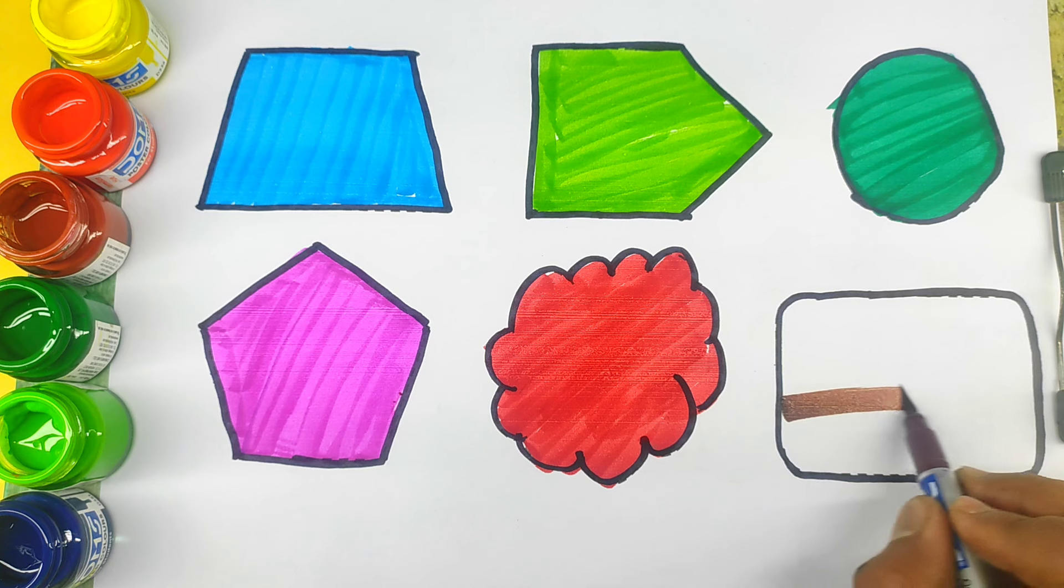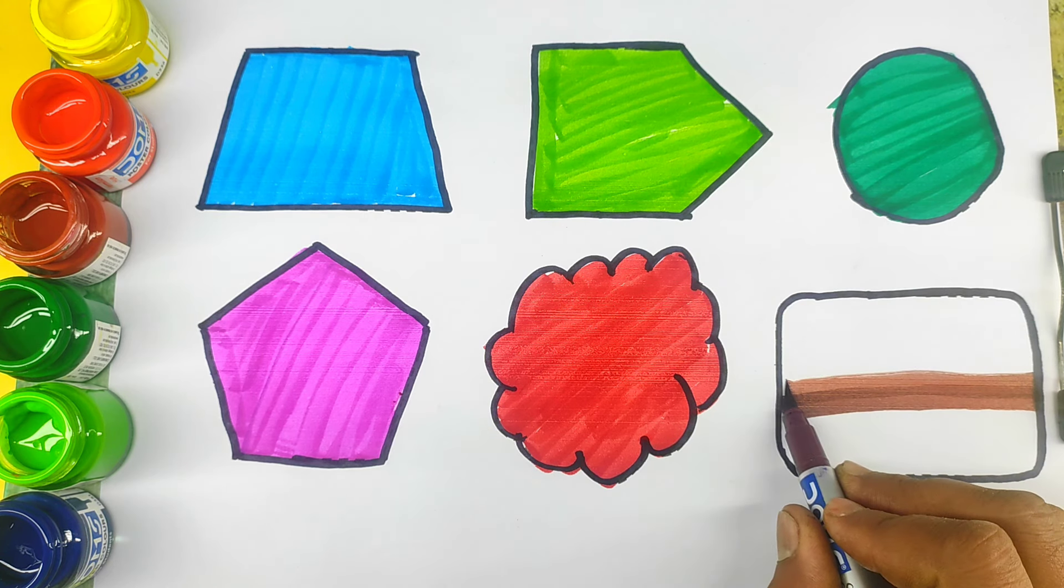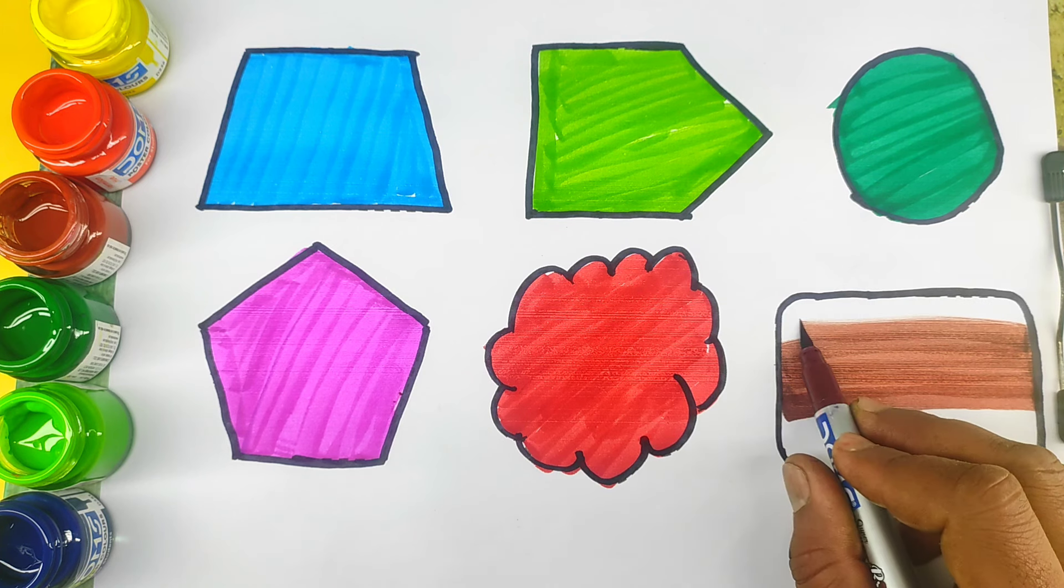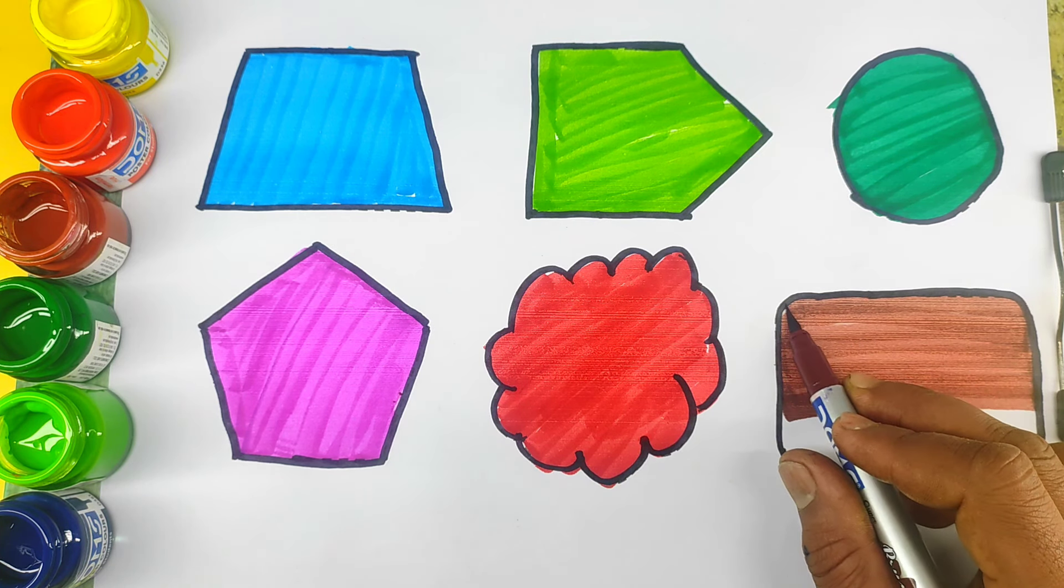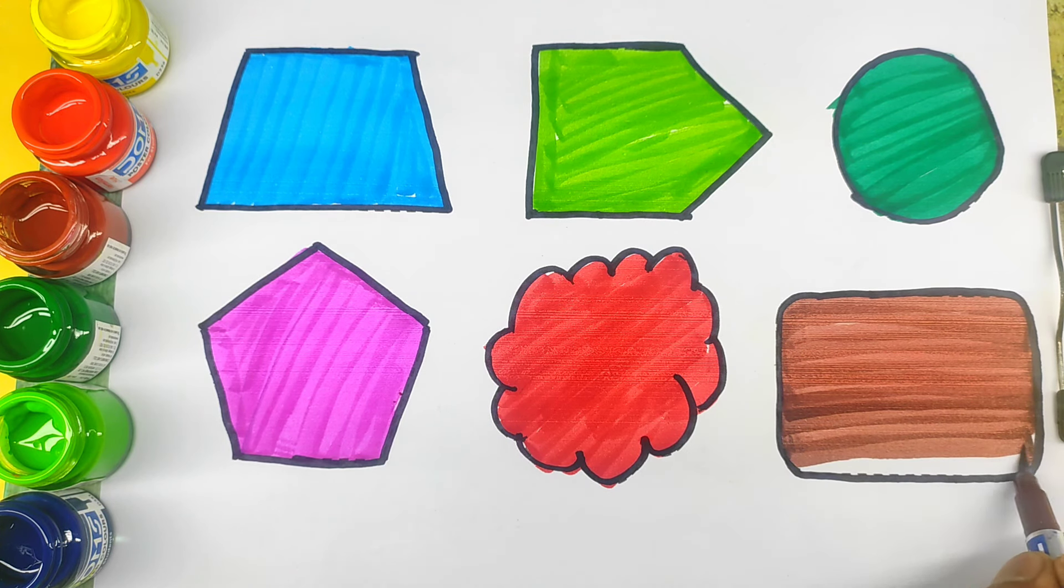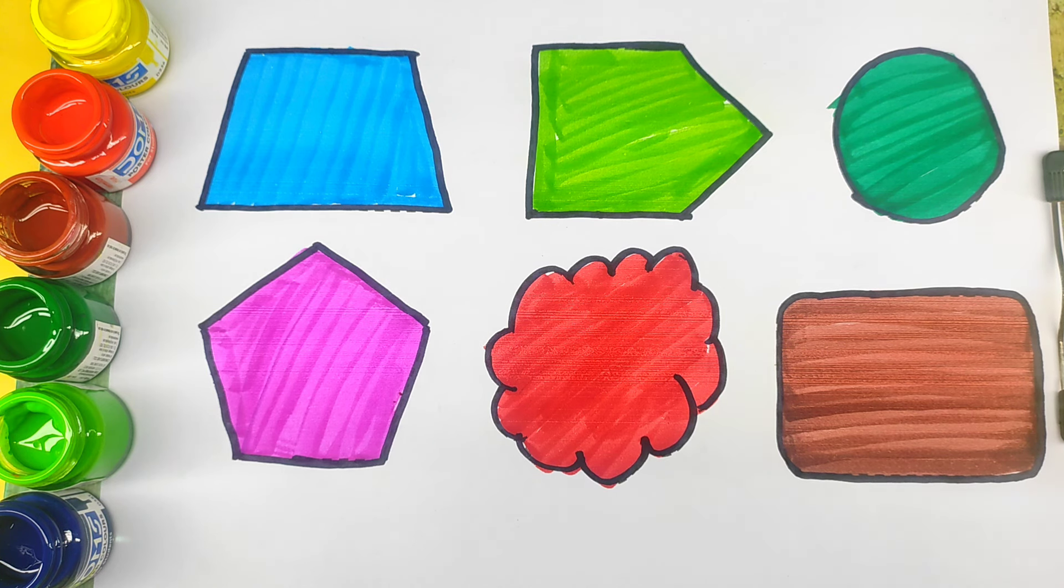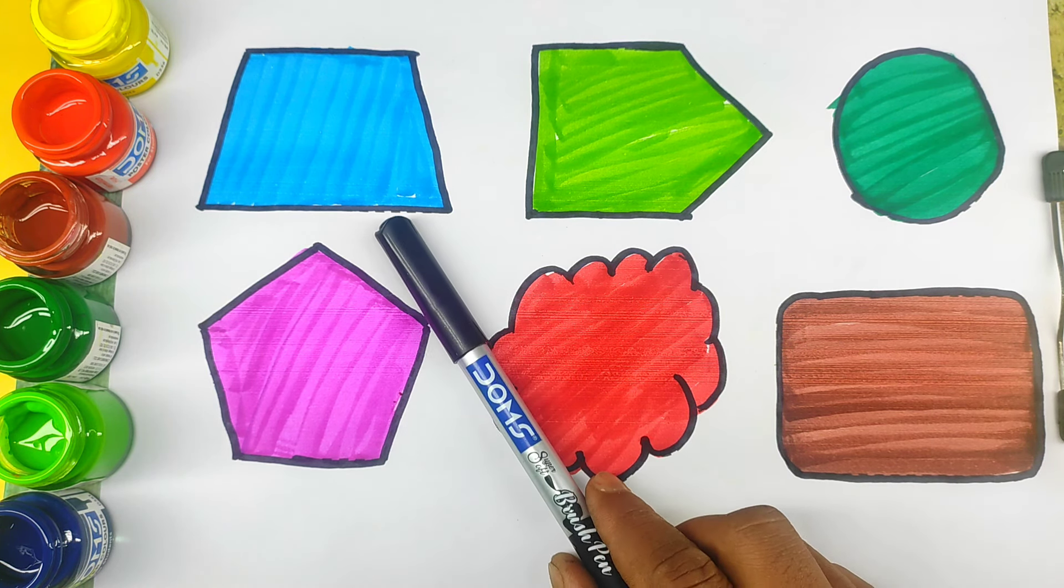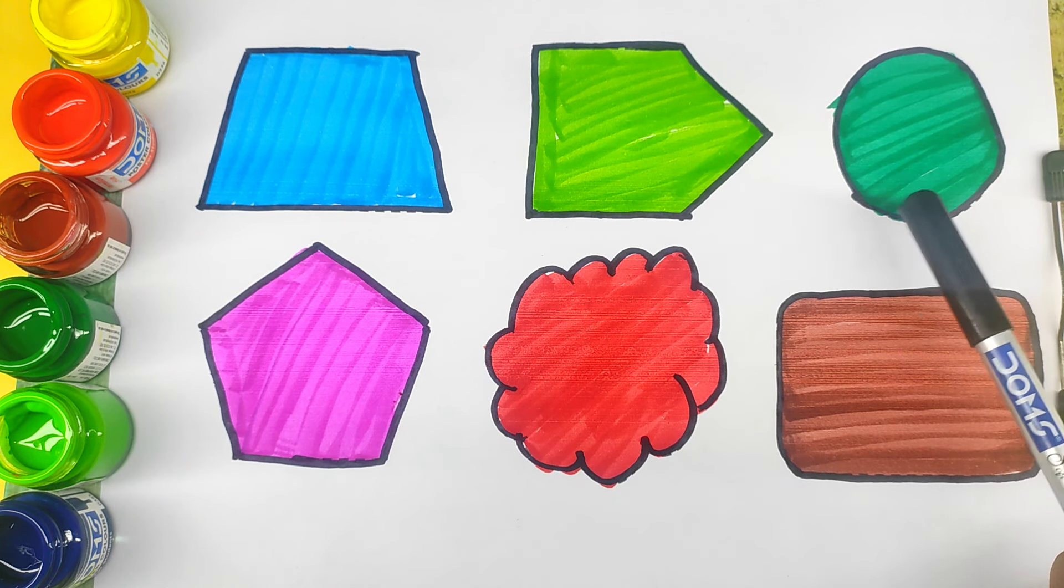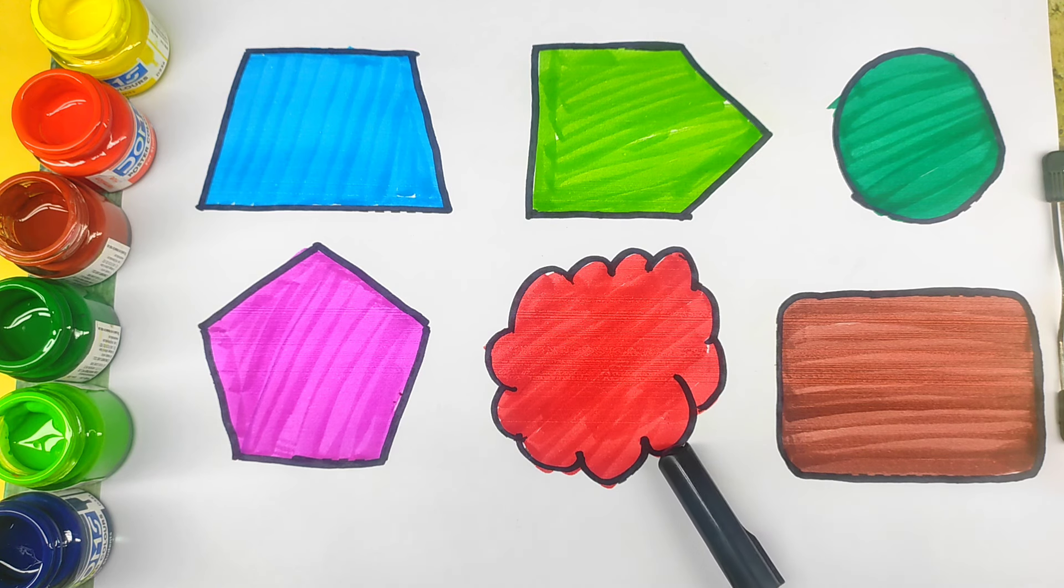Brown color, blue color, brown color, red color. Rounded rectangle, trapezoid, pentagon, oval, pentagon, cloud, rounded rectangle.